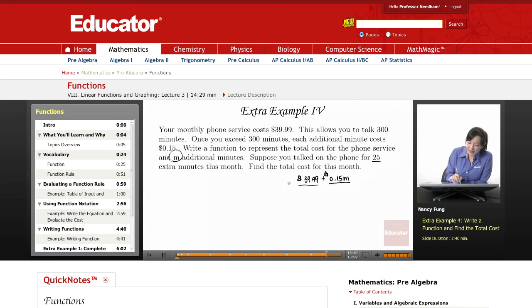We'll call that c for cost. We've created our function notation, our function rule. Now let's substitute the 25 extra minutes to find out how much you would be paying for that.